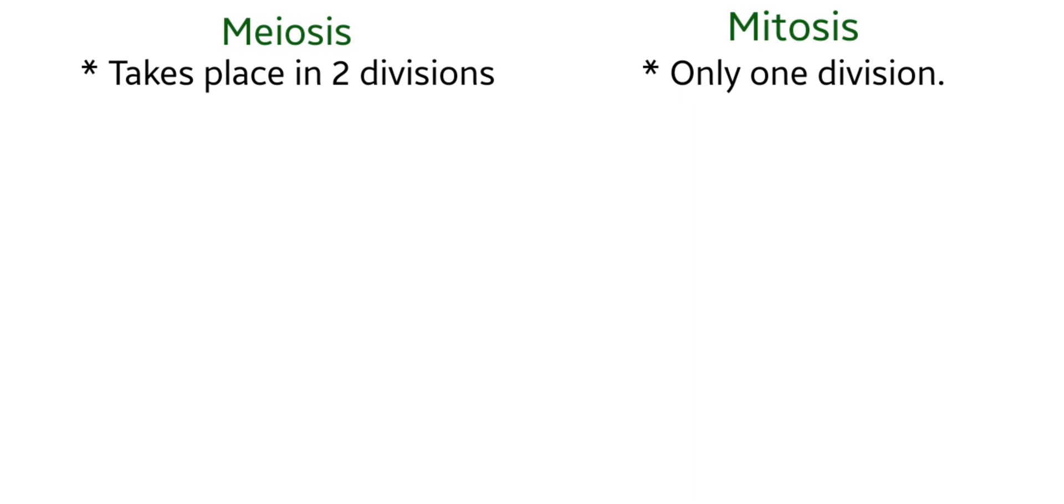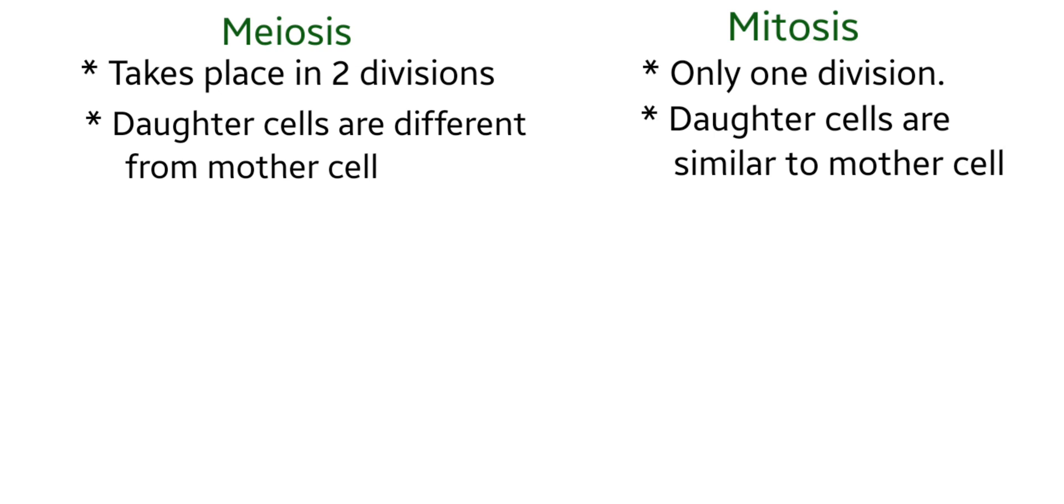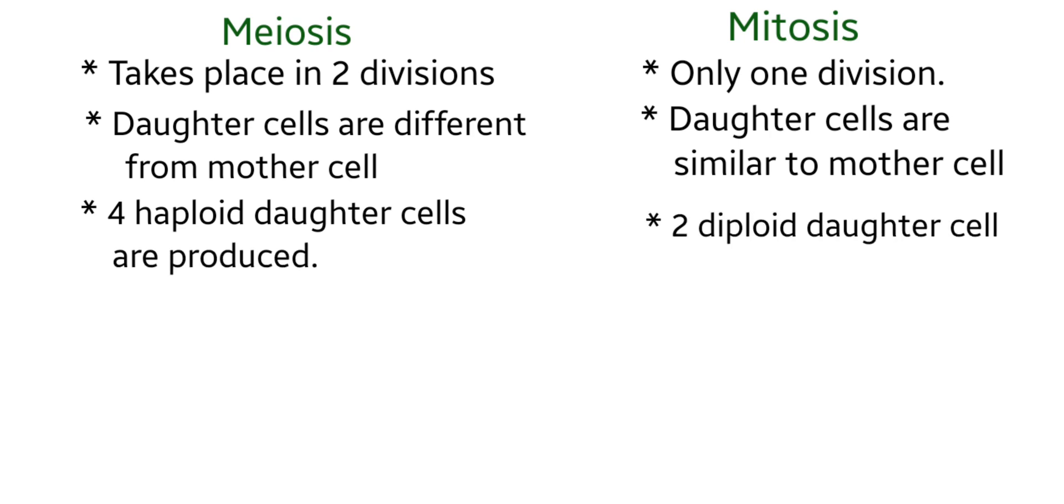Now you are able to say how mitosis and meiosis are similar and how they differ. Mitosis is a single division that produces two diploid daughter cells which are identical to each other and to the parent. But meiosis consists of two consecutive divisions which produces four haploid daughter cells that are different from the parent cells and from each other.